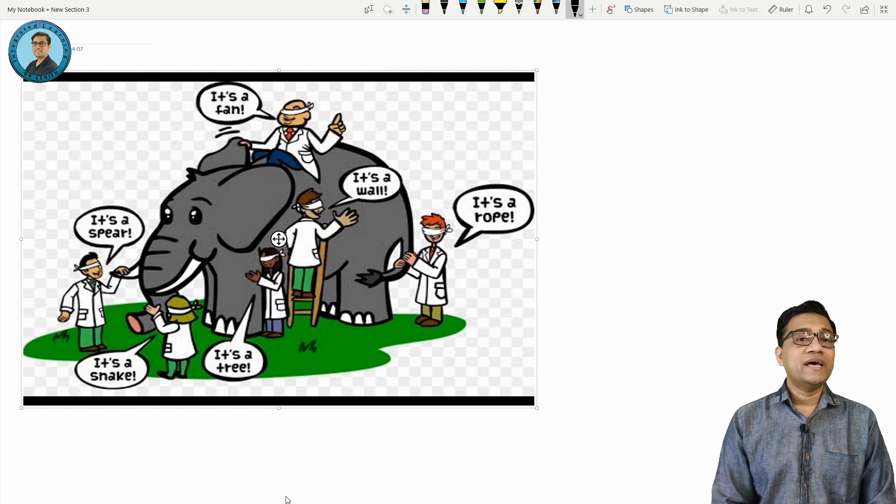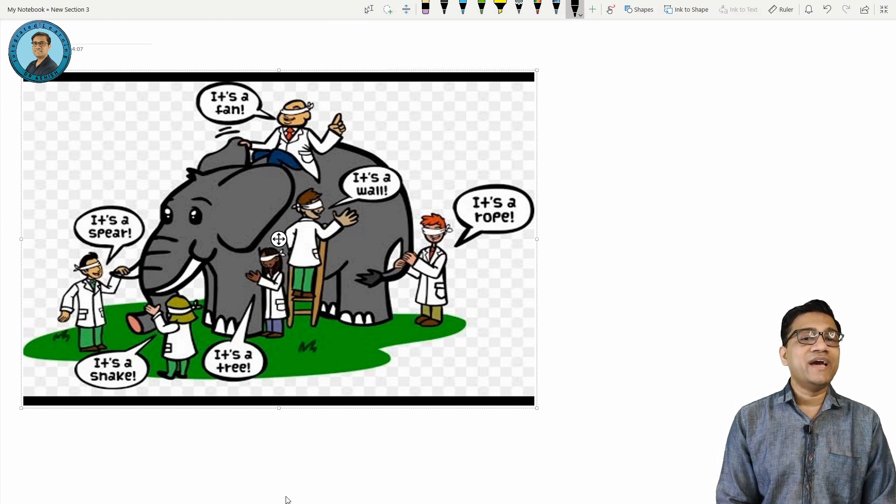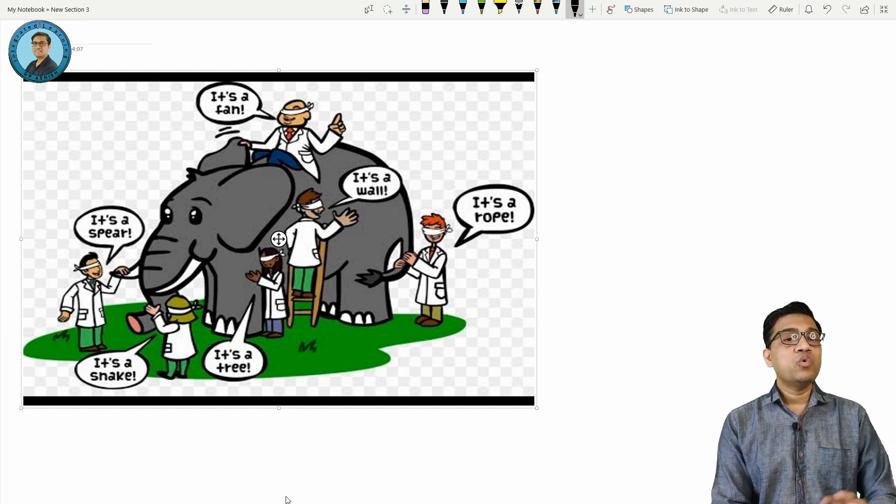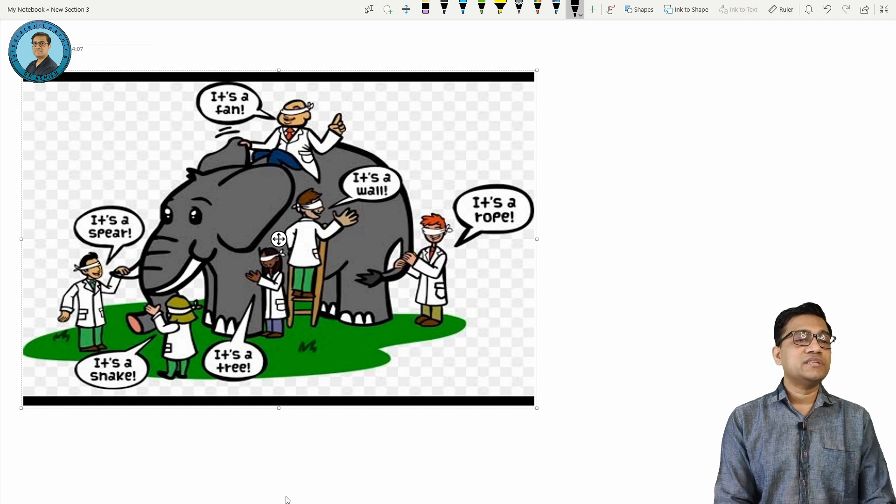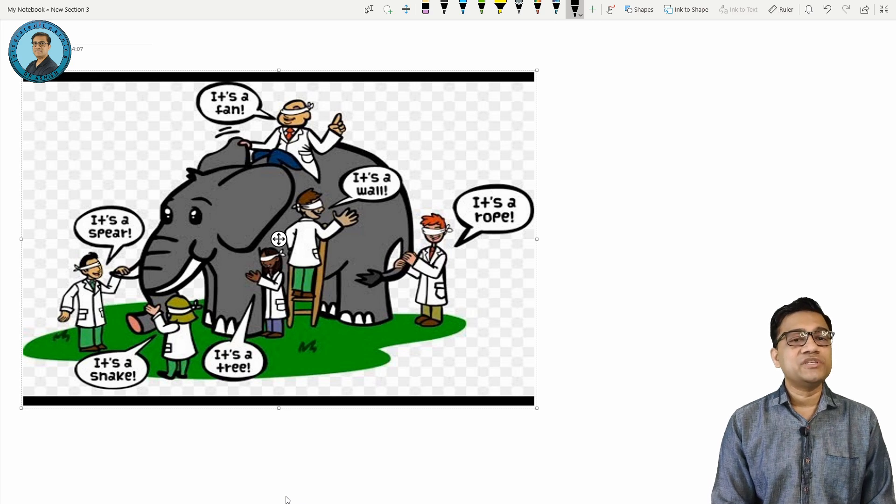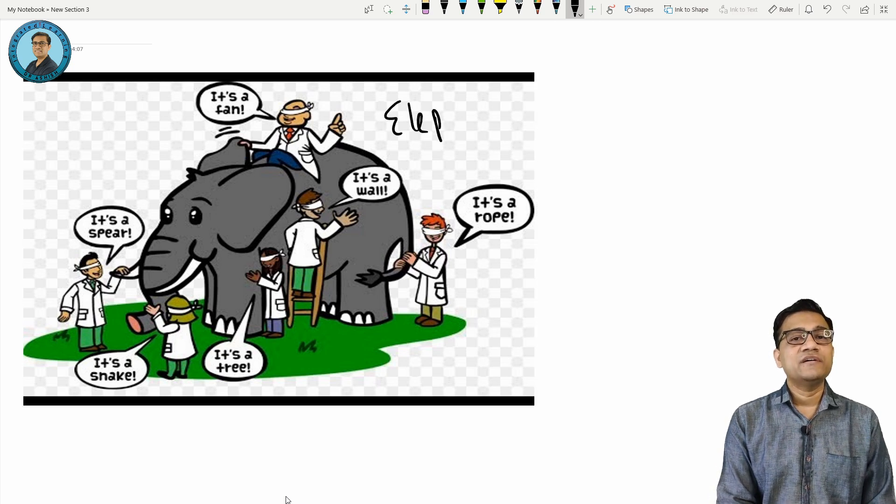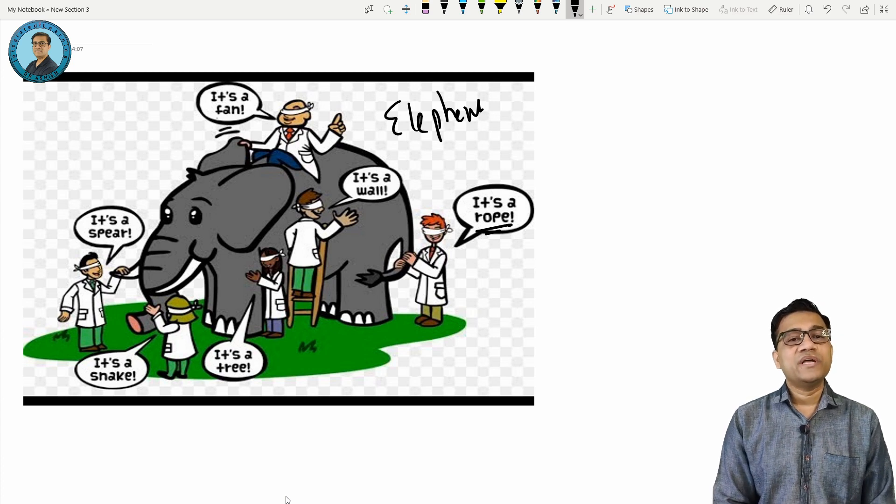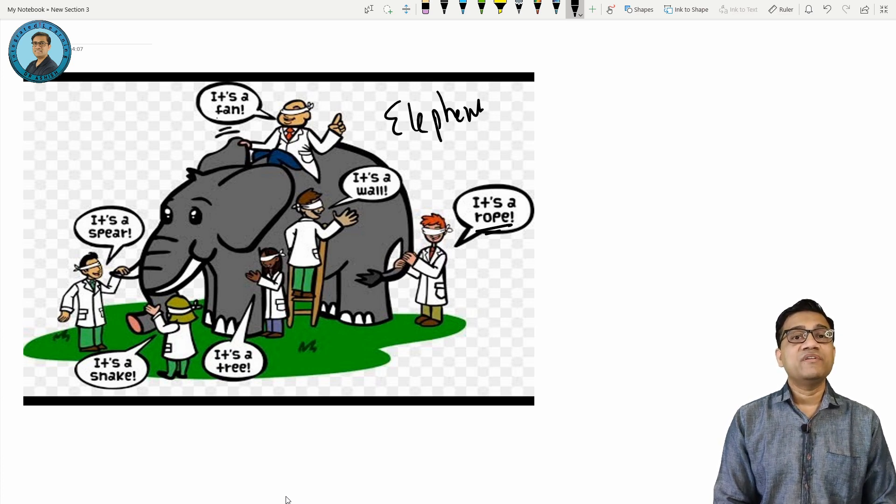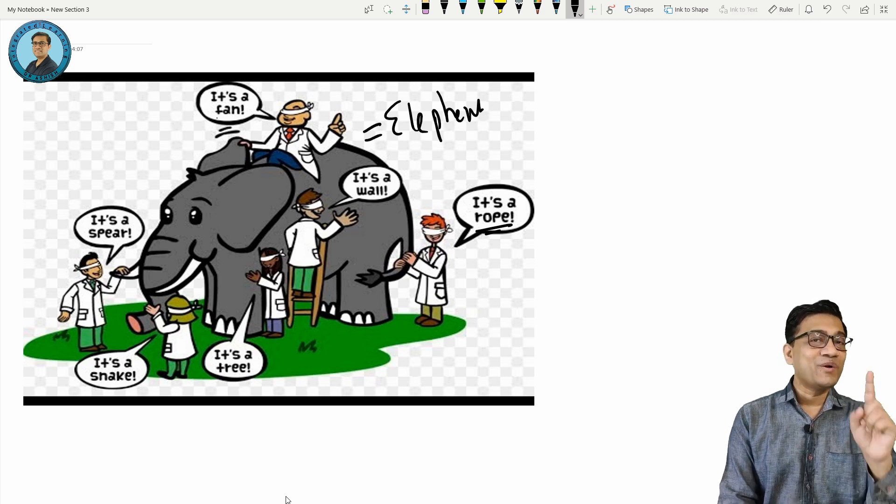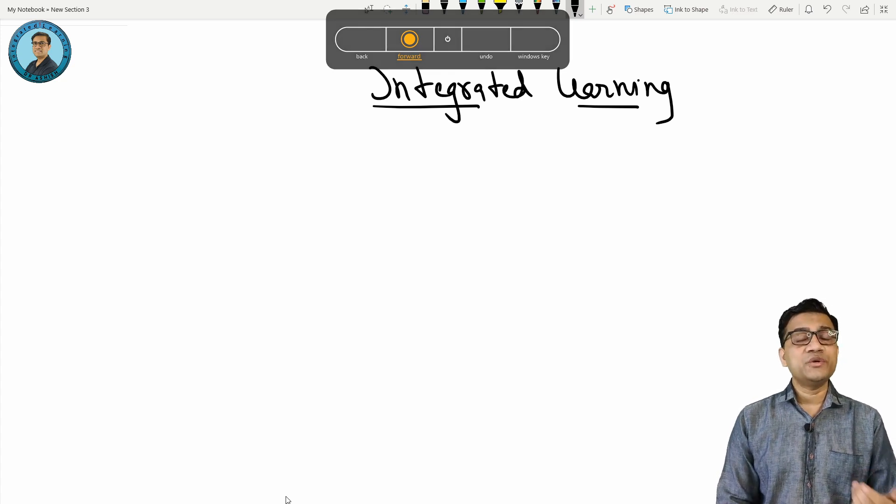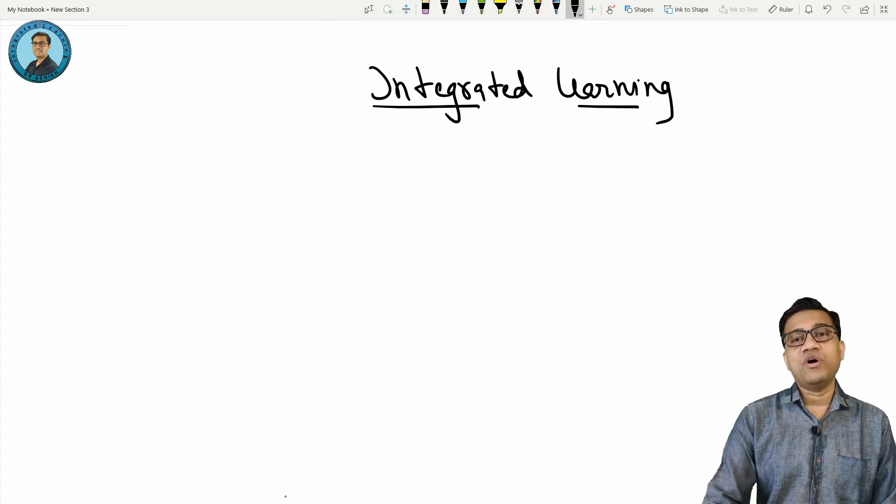They can all feel some part of the elephant and have their own interpretation. You can see in this diagram there are doctors touching different parts - oh it's a spear, it's a snake touching the trunk, or it's like a tree. None of them have the complete picture that it is an elephant. They all think rope, wall, fan, sphere. They are not wrong, but they are having partial understanding.